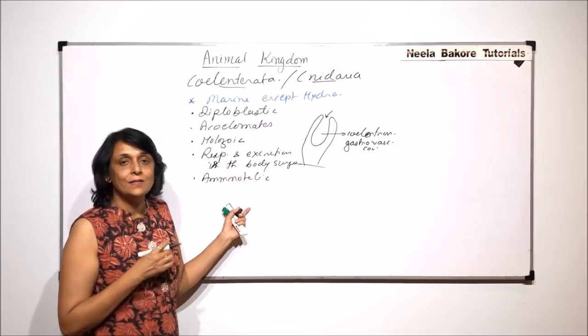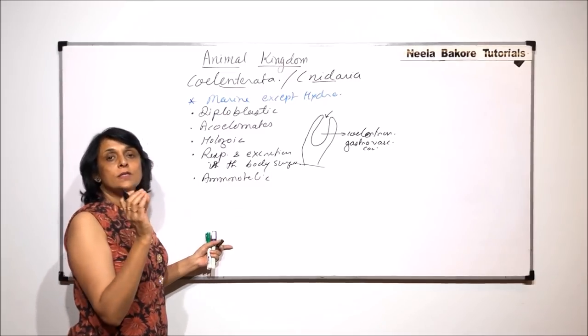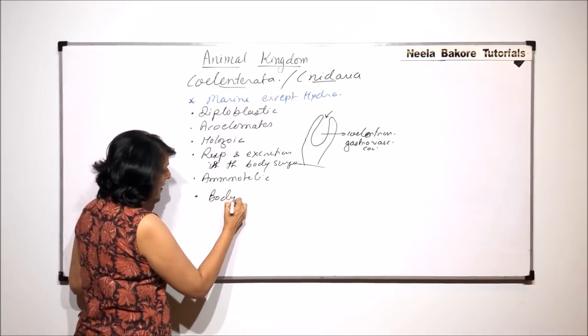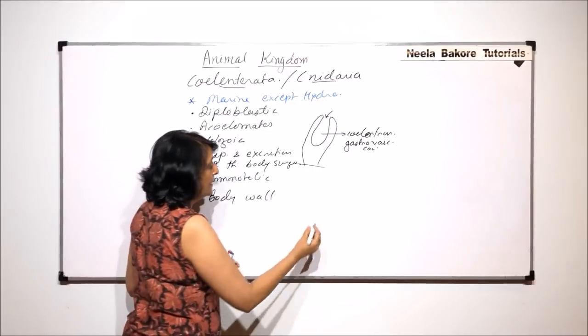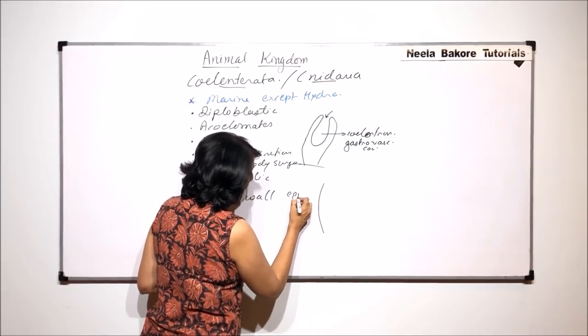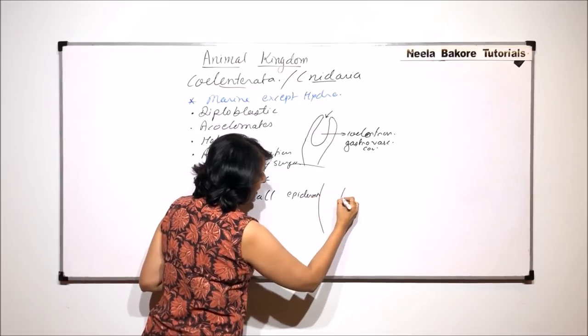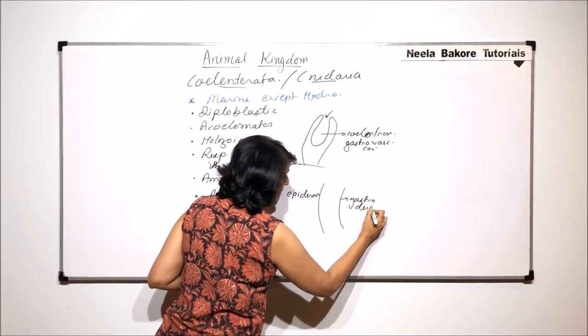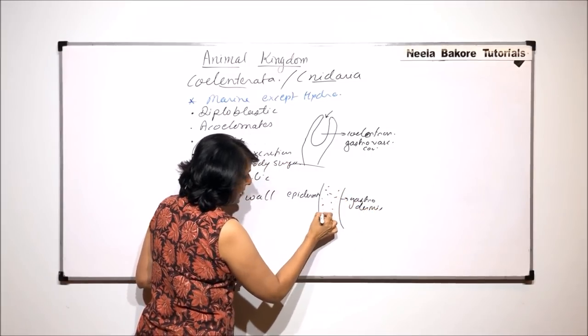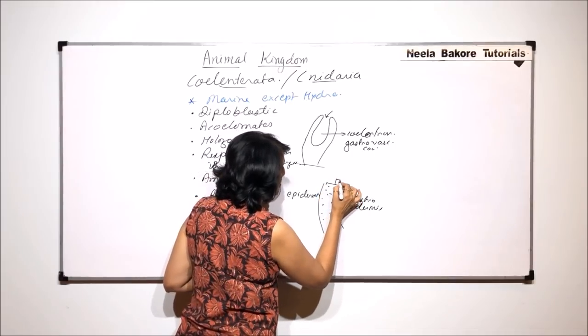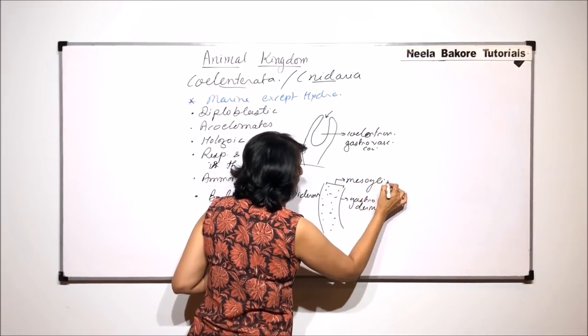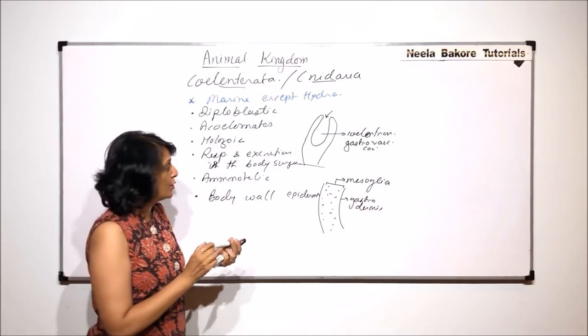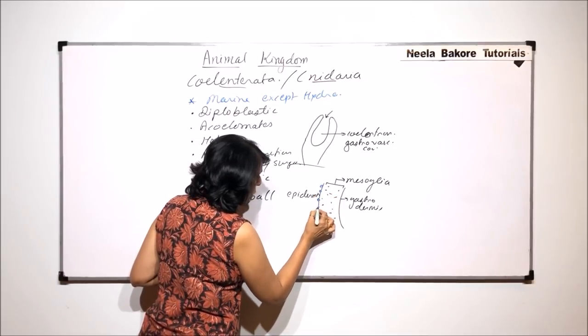Now before we take up the other detailed structures, we will talk about what is the body wall made up of. The body wall has two layers. The outer one is known as the epidermis and the inner one is called the gastrodermis. And in between, there is a gelatinous material which makes the mesoglea. The outer one, that is epidermis, has some special cells.